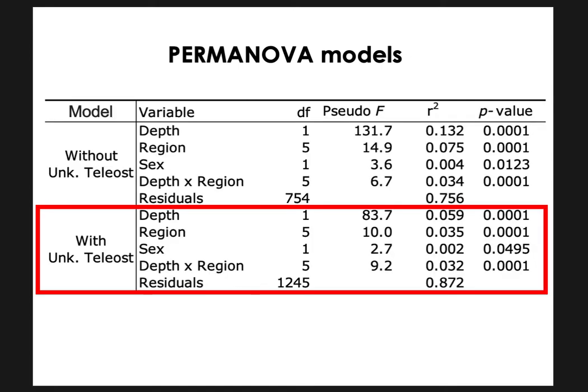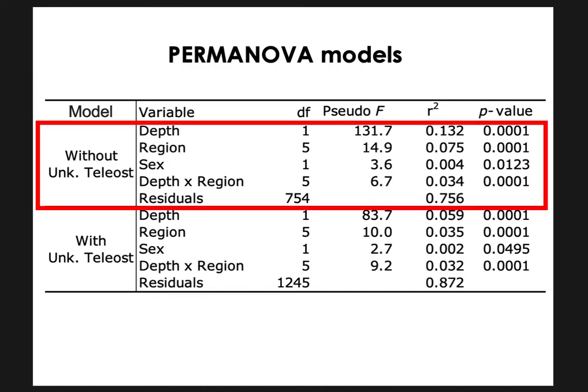I used a PERMANOVA to better understand which factors best explain the variability in lingcod diet. I used both abundance by number and by weight to create individual models, but they were nearly identical, so I'm choosing to only present using number here. The first model included the unknown teleost prey group and found that depth, region, sex, and the interaction between depth and region were significant factors in explaining variability in lingcod gut contents. When I removed the unidentified teleost prey group, I created a stronger model with those same factors.